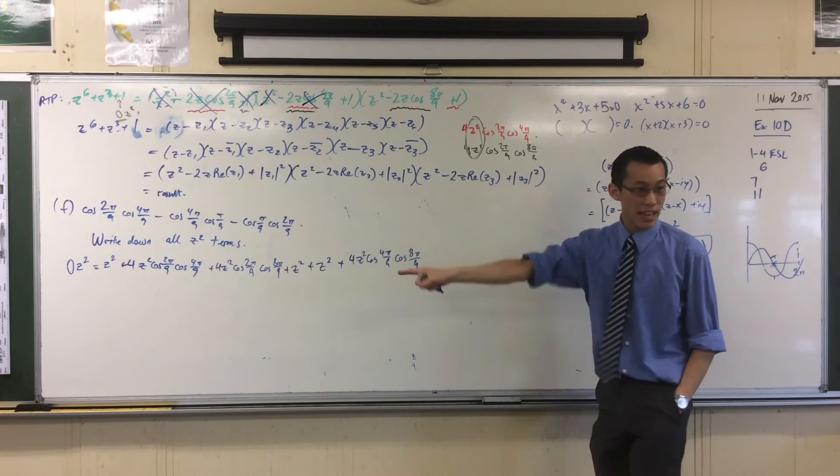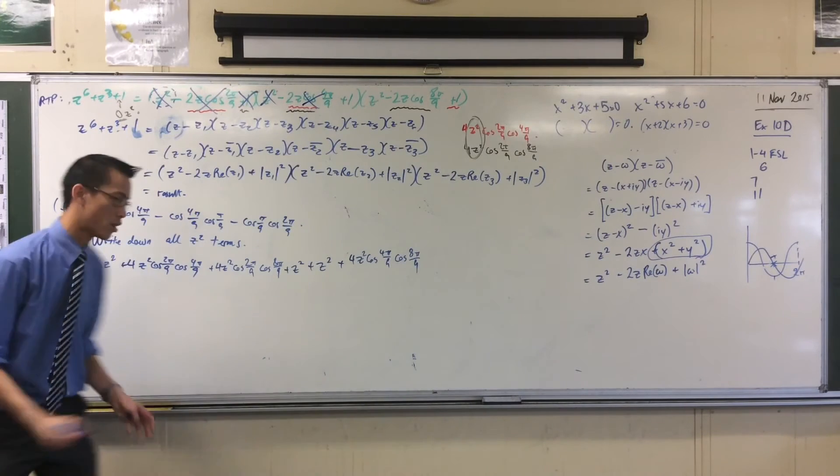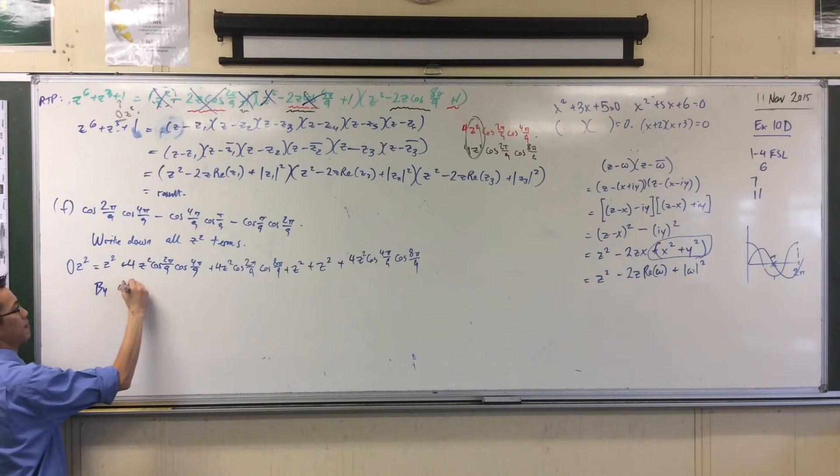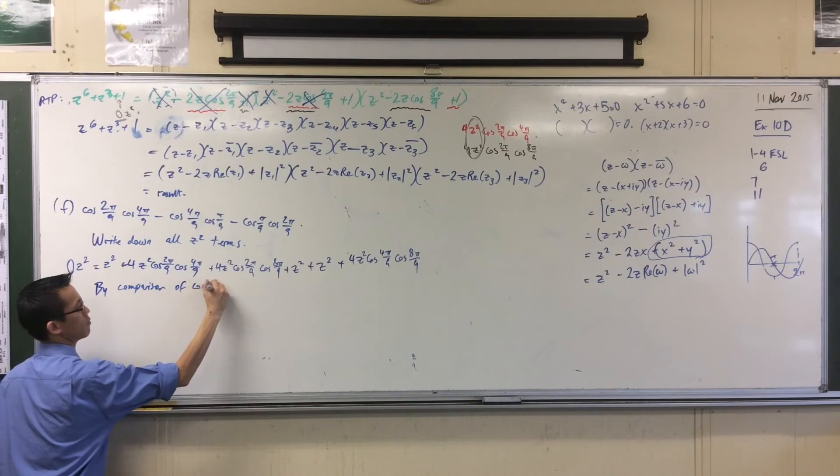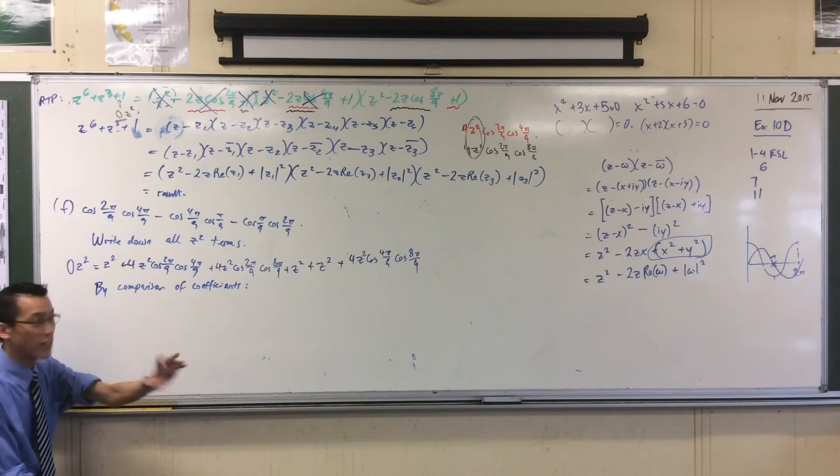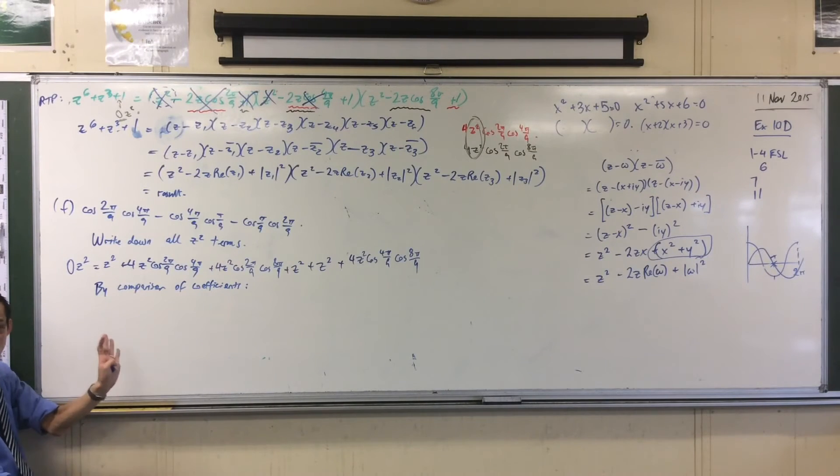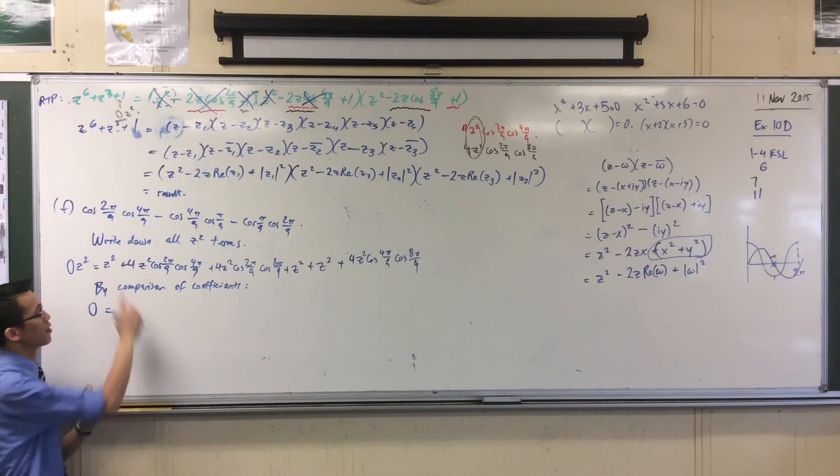So now I have the left-hand side. I've got the right-hand side. I can say by comparison of coefficients. Okay, no more z-squared terms. I just want the coefficients of the z-squares. So I've got zero here. How many z-squares do I have by themselves? The answer is three of them. One, two, three.